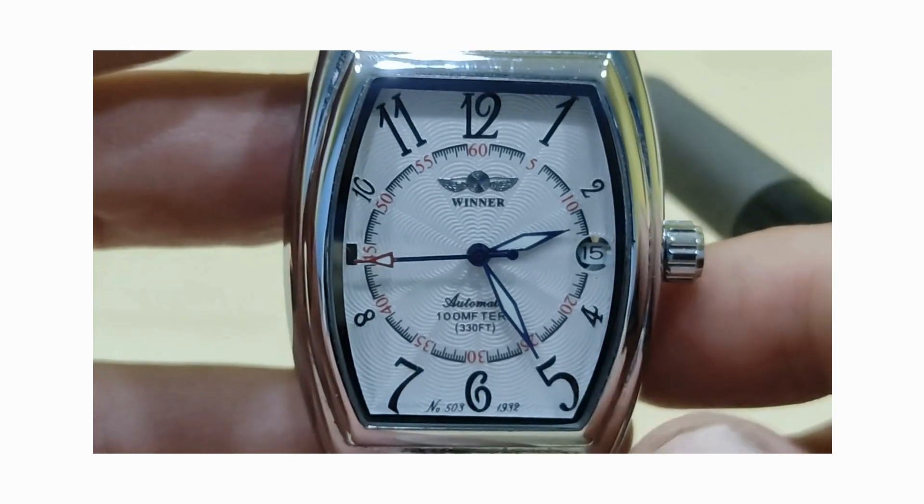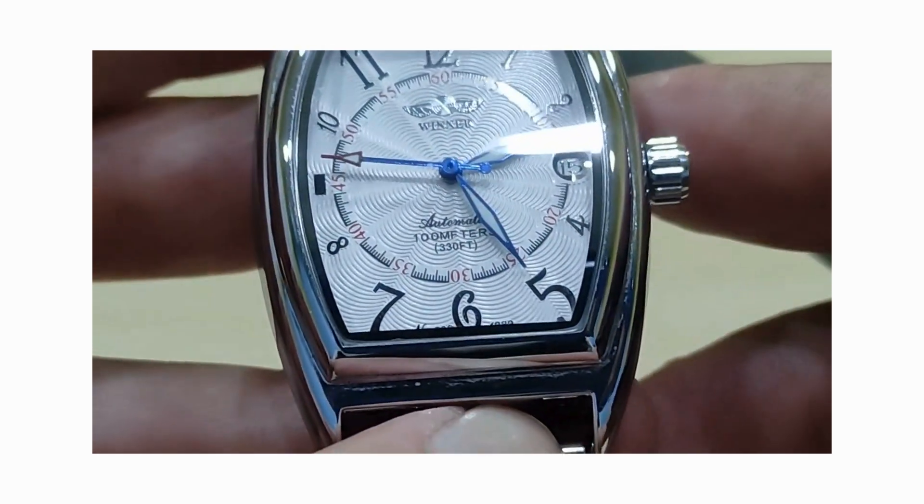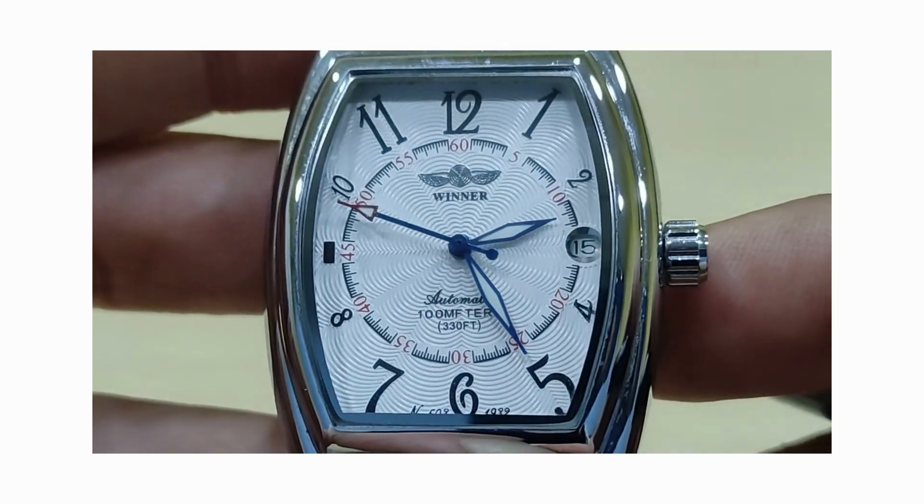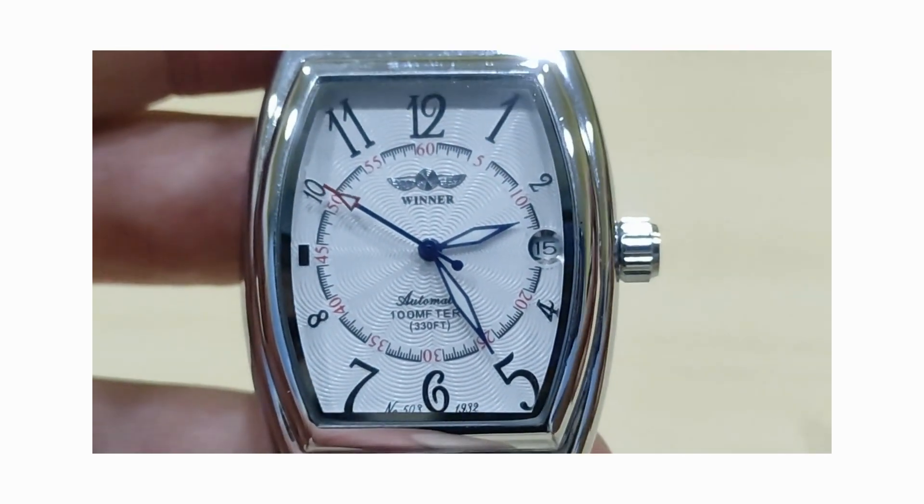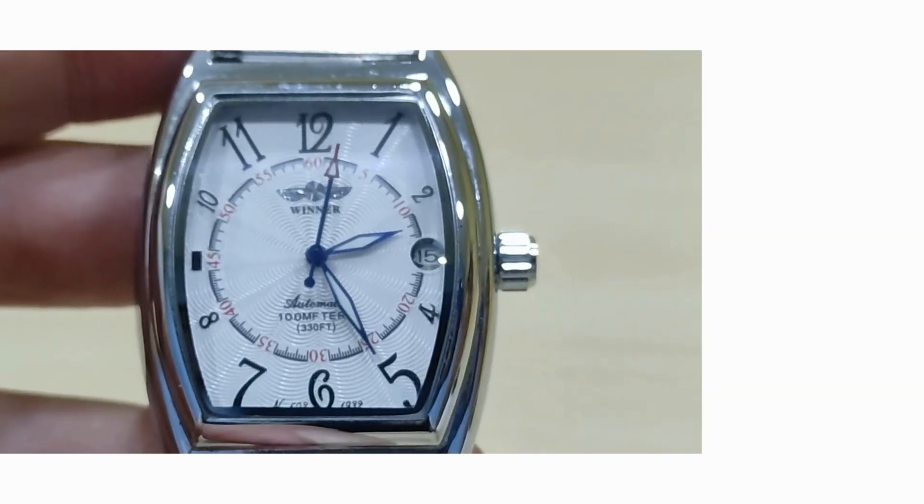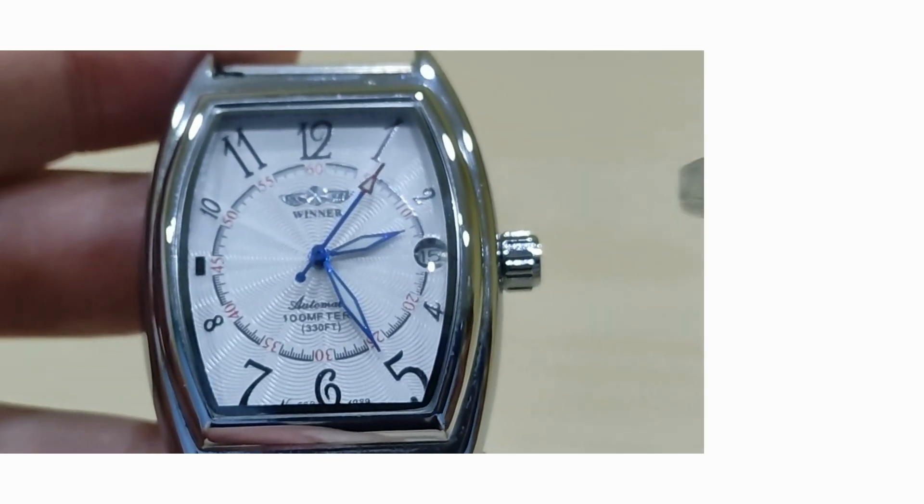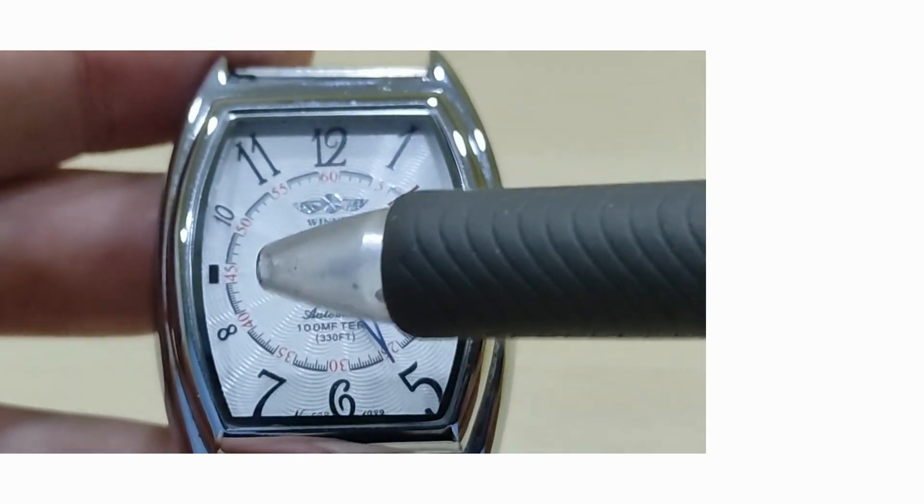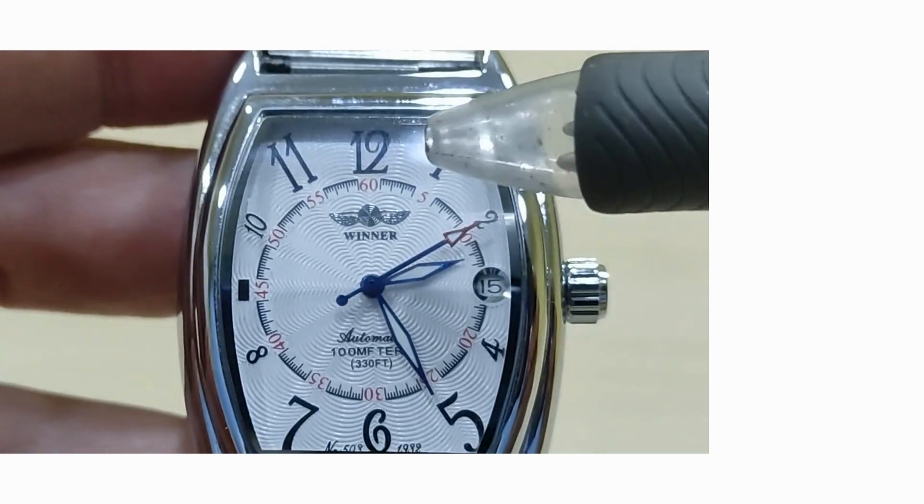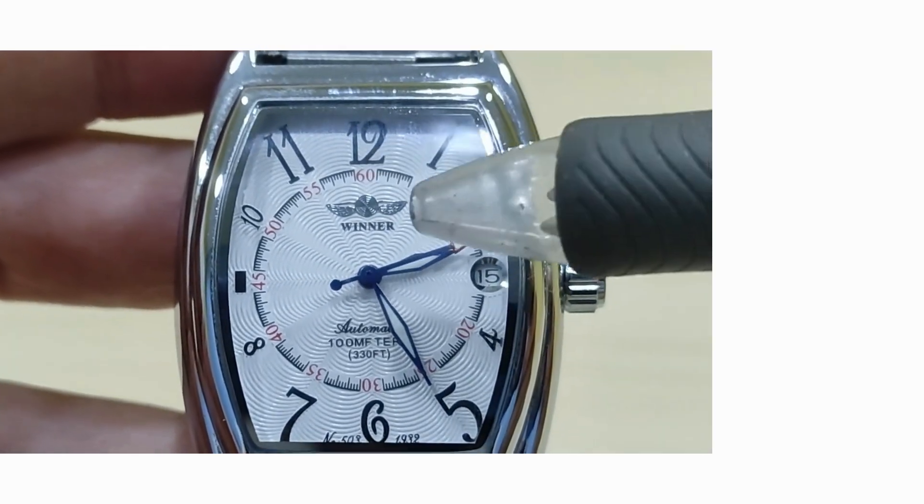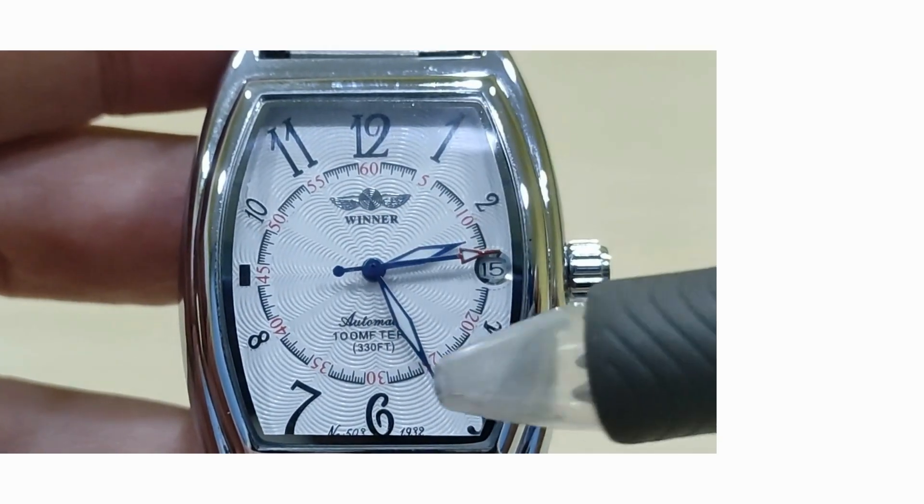The numbers are actually printed around the outside. Within that, you have a central dial as you can see running around with numbers in red from five in five increments to sixty.